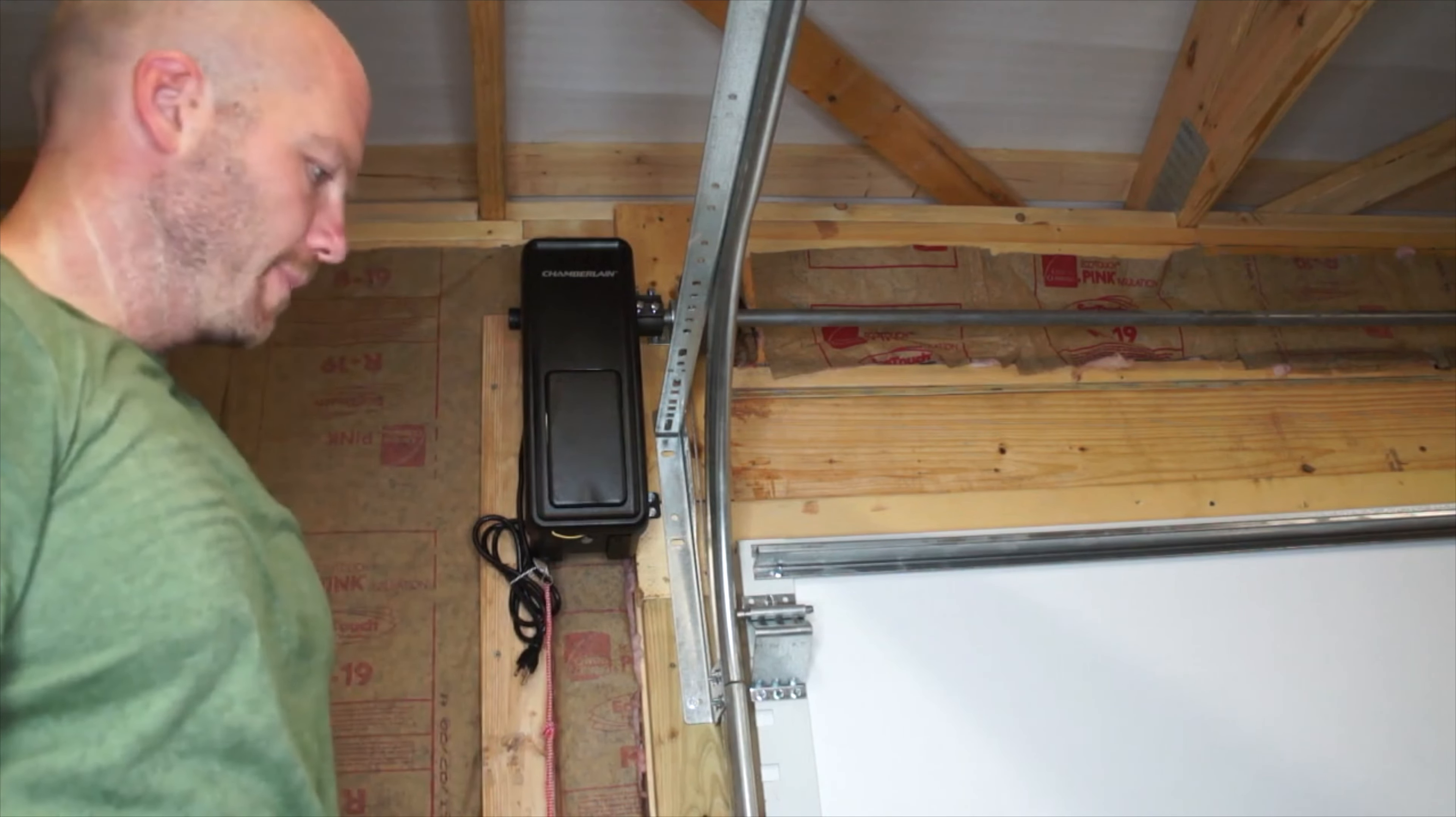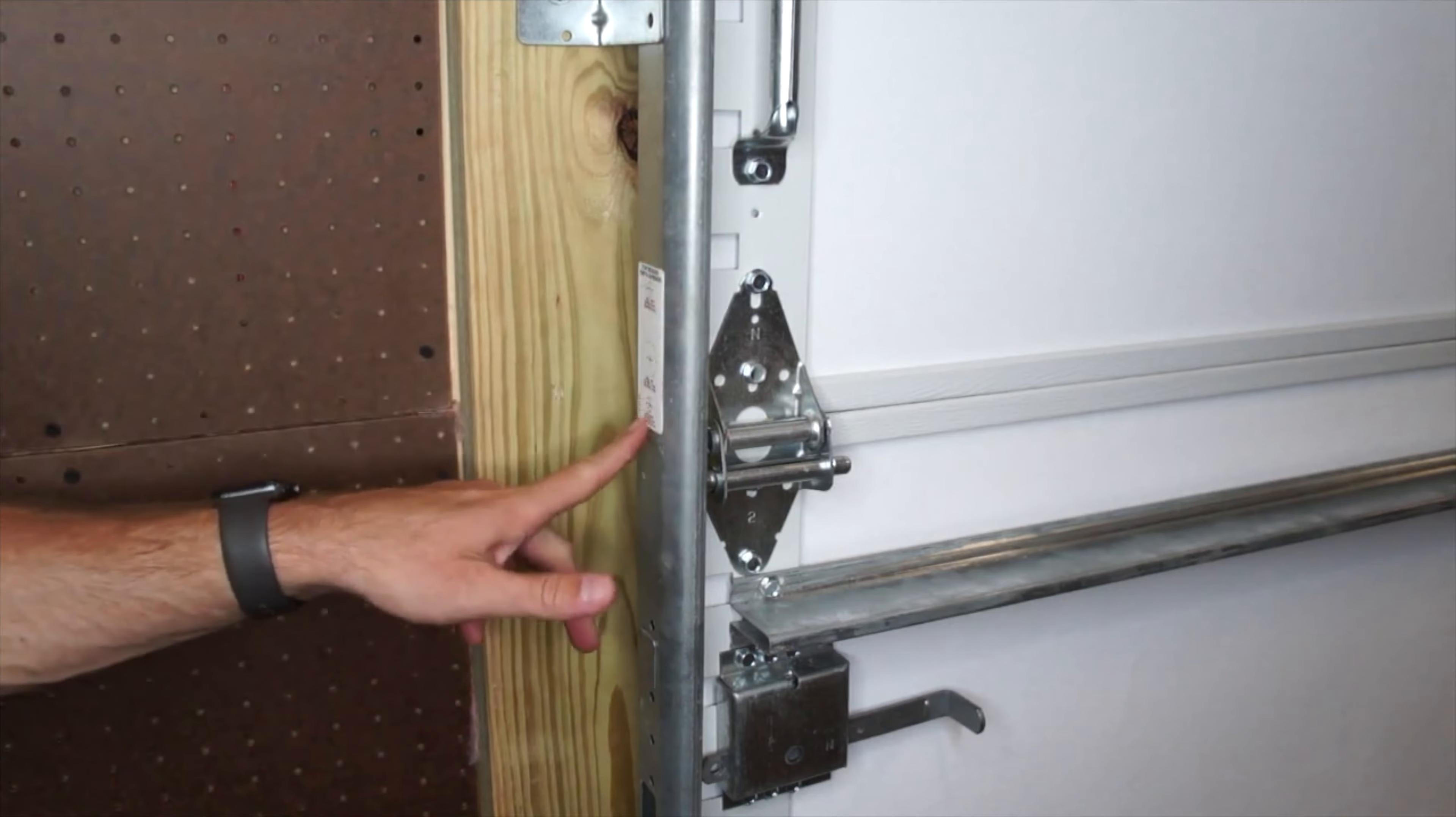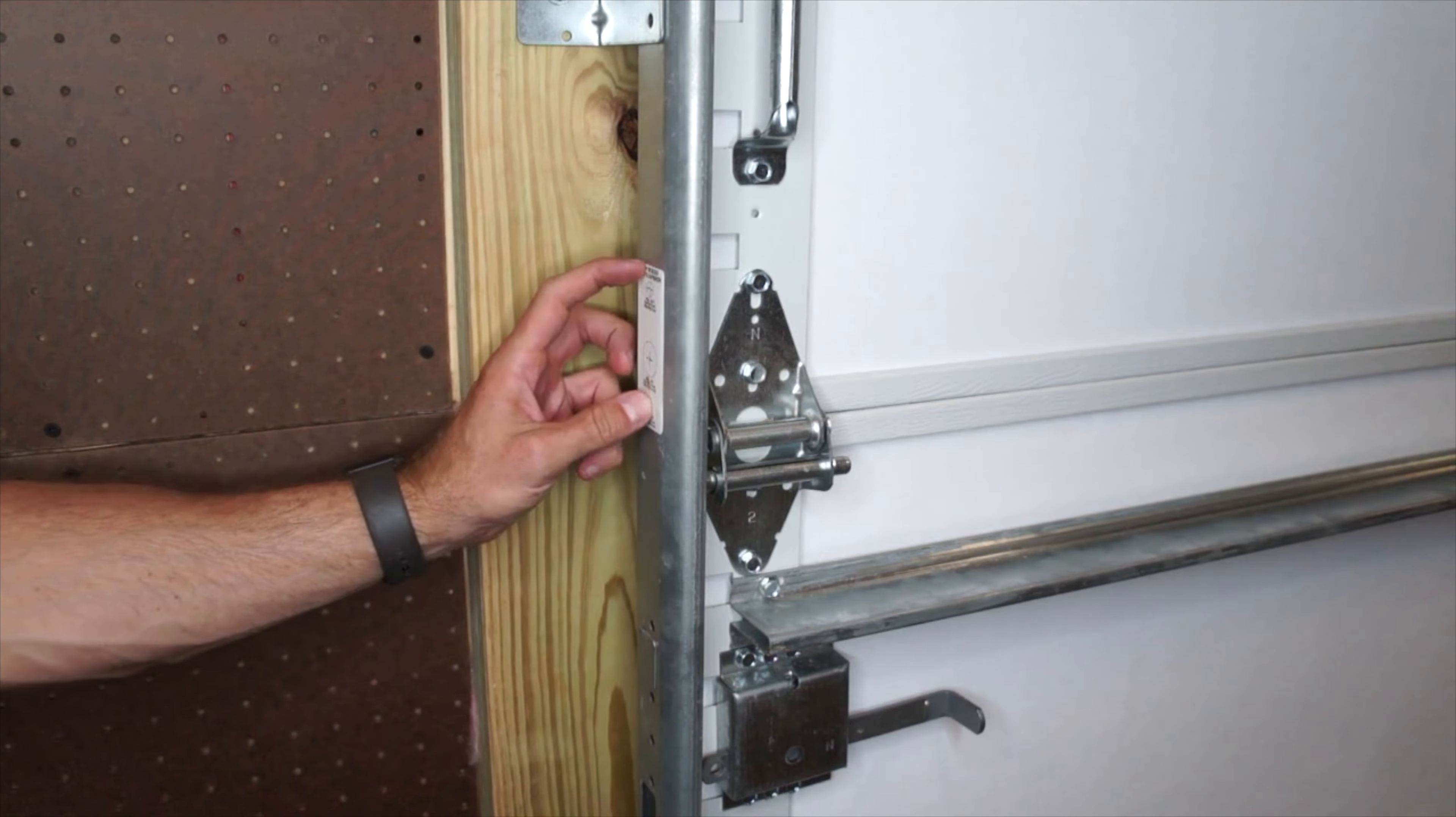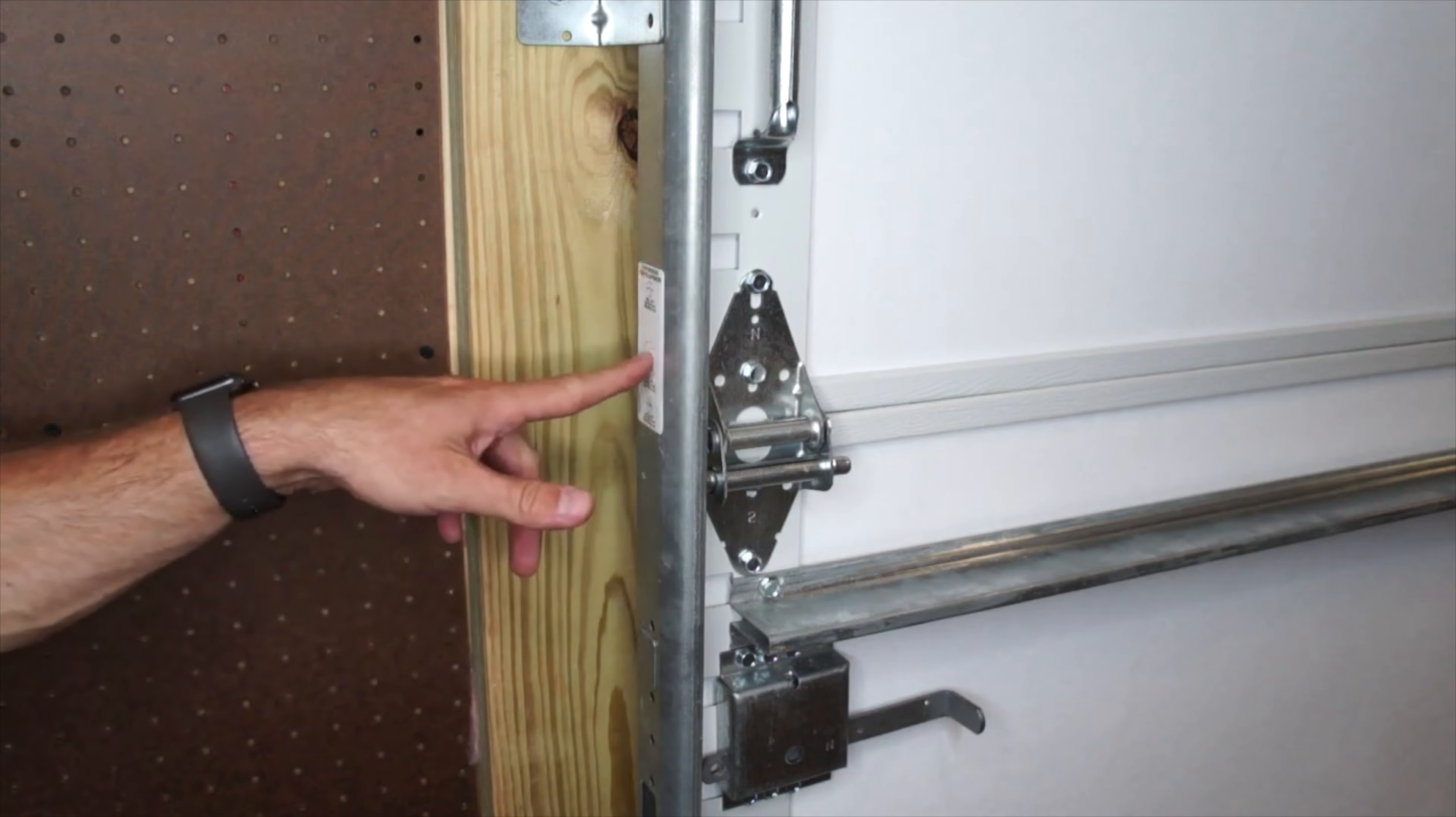And the next step will be the automatic door lock. When mounting the automatic bolt lock for the door, it comes with these nifty little stickers that show you where to drill the holes and what size drill bit to use. There will be two holes for the screws that are five-sixteenths, and then there's a three-quarter inch hole in the middle.